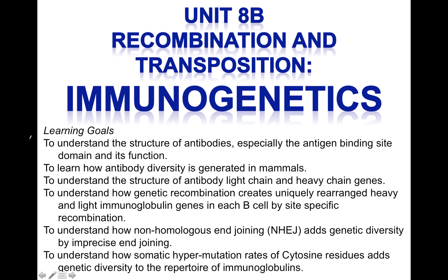Our learning goals are to understand the structure of antibodies, especially the antigen-binding site domain and its function, to learn how antibody diversity is generated in mammals, to understand the structure of antibody light chain and heavy chain genes, to understand how genetic recombination creates uniquely rearranged heavy and light chain immunoglobulin genes in each B cell by site-specific recombination, to understand how non-homologous end-joining adds genetic diversity by imprecise end-joining, and to understand how somatic hypermutation rates of cytosine residues adds genetic diversity to the repertoire of immunoglobulins.